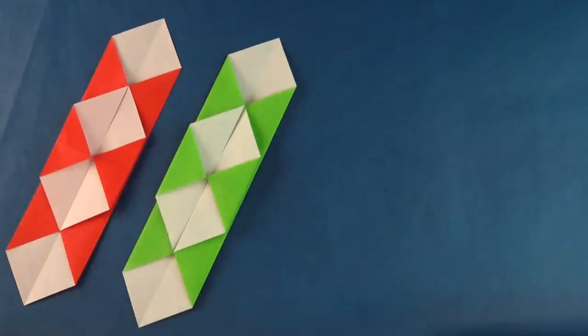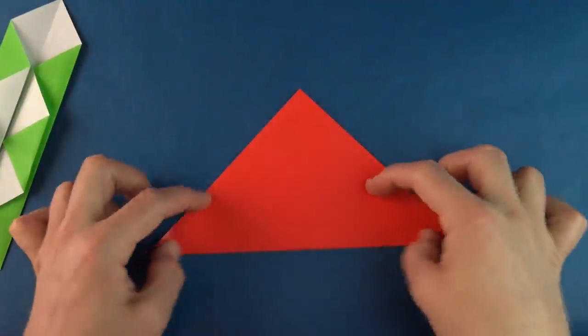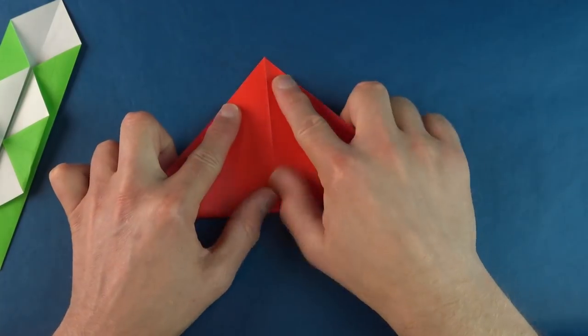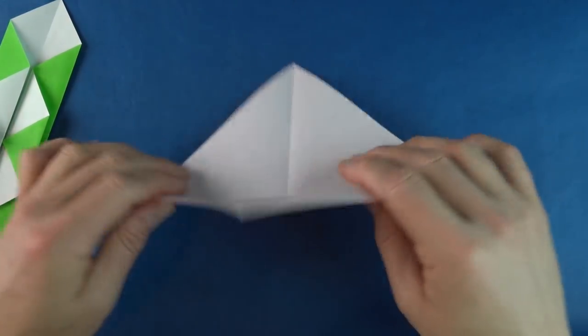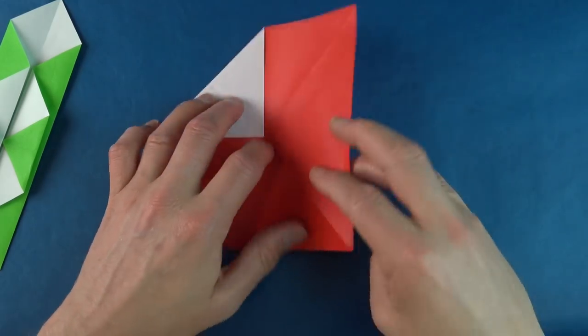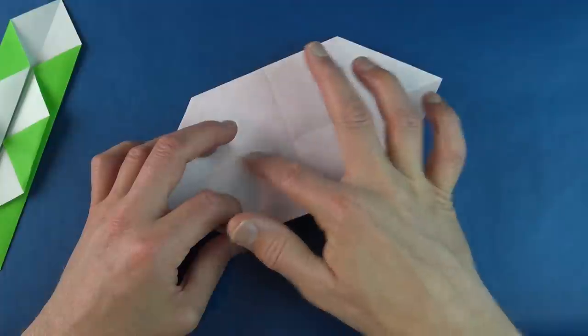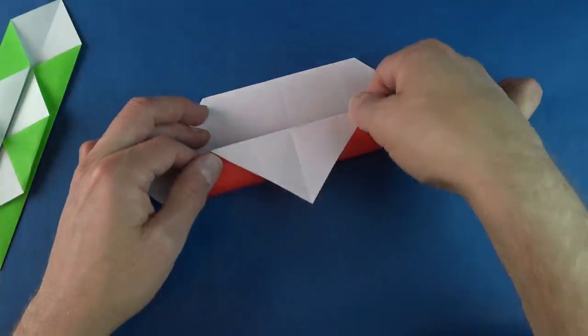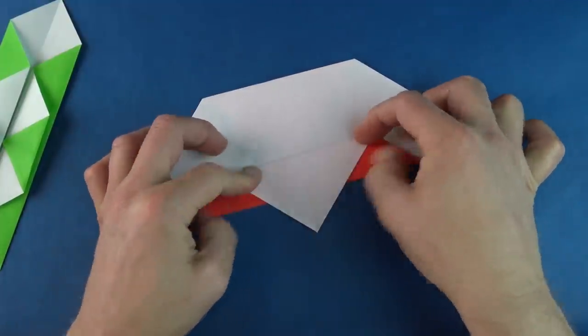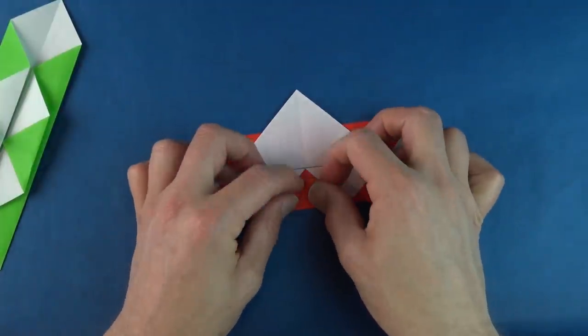You can probably figure out how I folded these, but just in case, begin by folding in half diagonally in both directions. Turn over and fold two opposite corners to the middle. And turn over and fold this edge to the crease, but let the flap swing out. And repeat. And fold the corners to the middle.